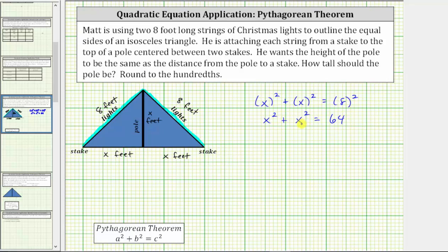X squared plus x squared equals two x squared. Notice we have a quadratic equation, but because we only have an x squared term, not an x term, we can solve for x using square roots.